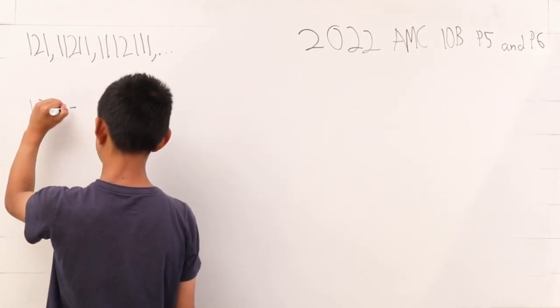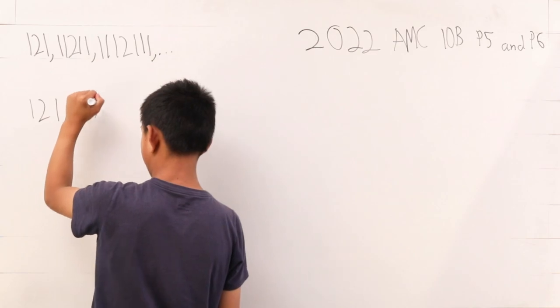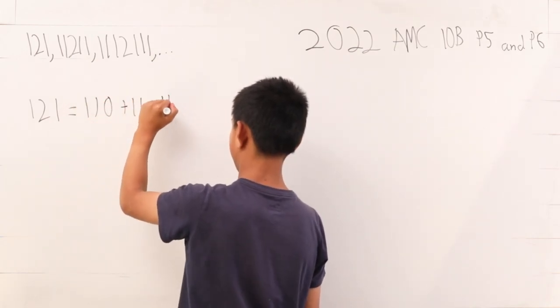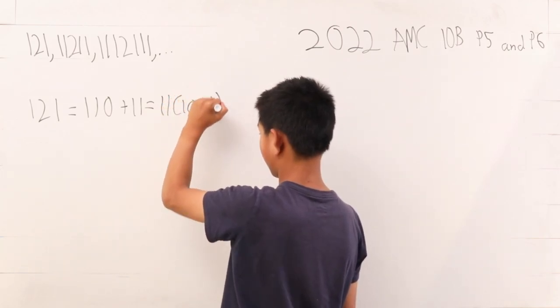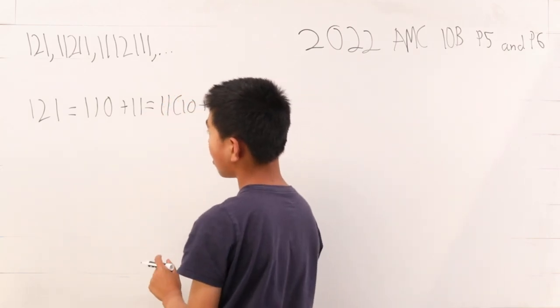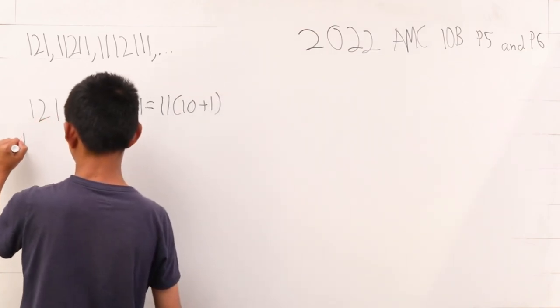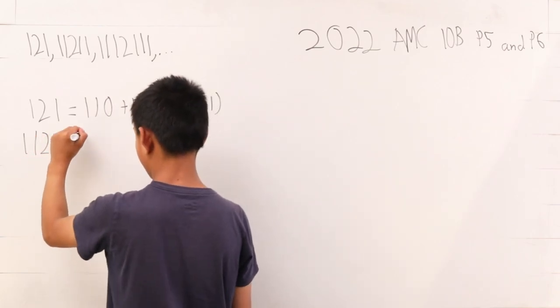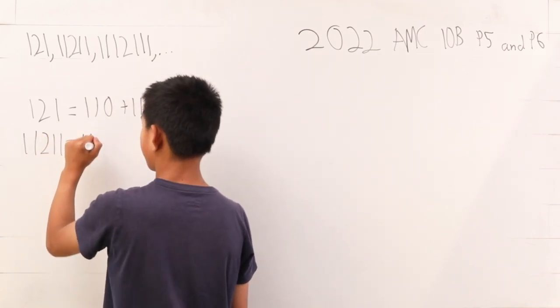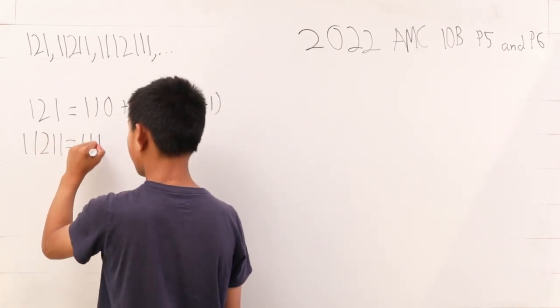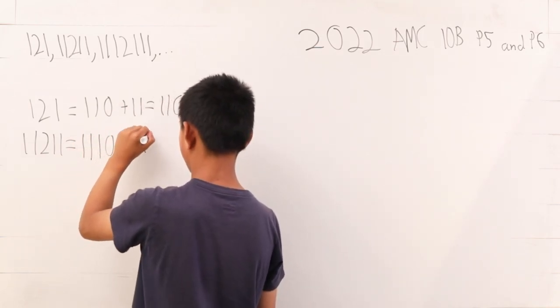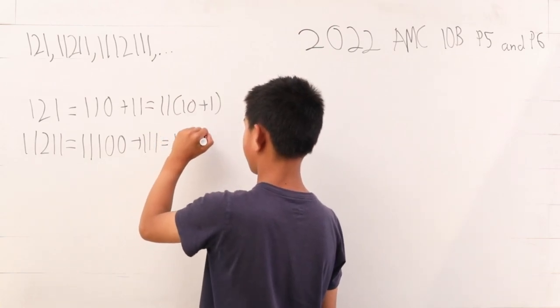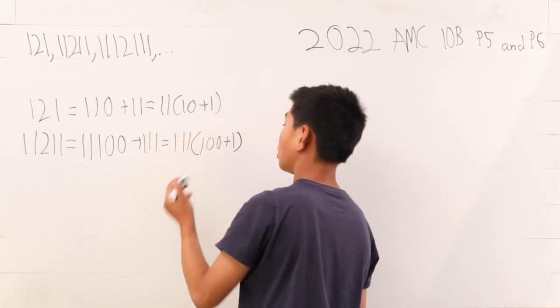121 we can break into 11s. This is 110 plus 11, so we factor out the 11. This is 11 times (10 plus 1). 121 is not prime. 1121, same thing. This is now 1111 plus 111. Factor out the 111. This is 111 times (10 plus 1).